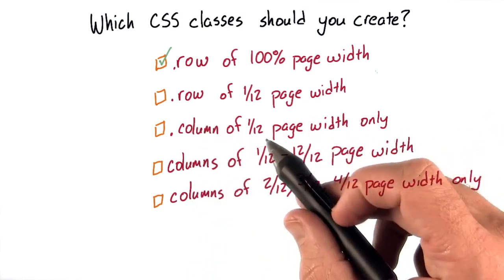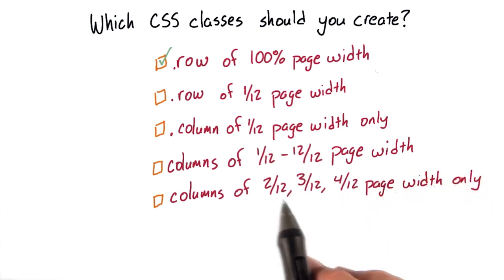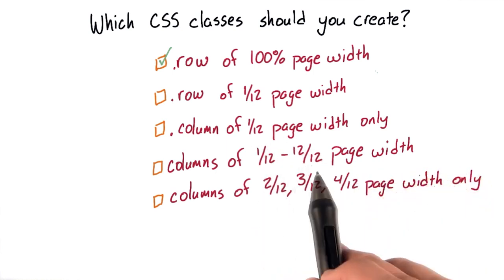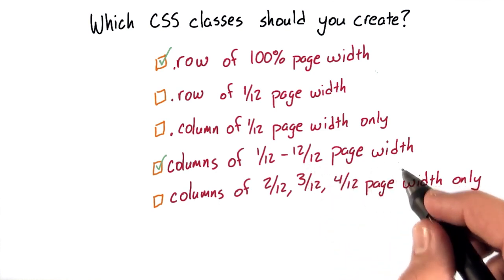Are we only going to need a column of 1/12th of the page width? No. In fact, we're going to need columns of everything between 1/12th and 12/12 page widths. By defining columns for any size between 1/12 and 12/12 page widths,